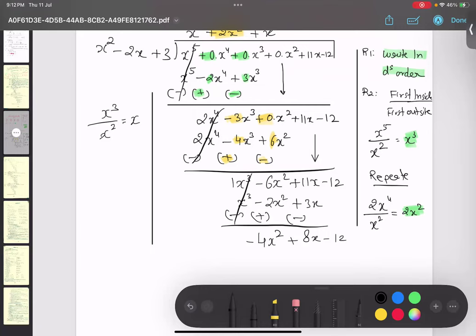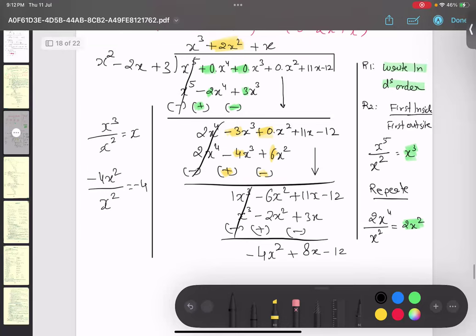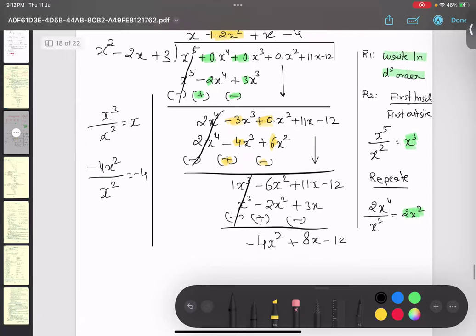Again I will do the same thing. First term from inside minus 4 x², first term from outside x². x² x² cancel, minus 4 remaining, so I'll write on the top minus 4. It's a very long portion which I have taken. x² into minus 4 is minus 4x². Minus times minus plus, 4 into 2, 8x. Plus minus minus, minus 12.